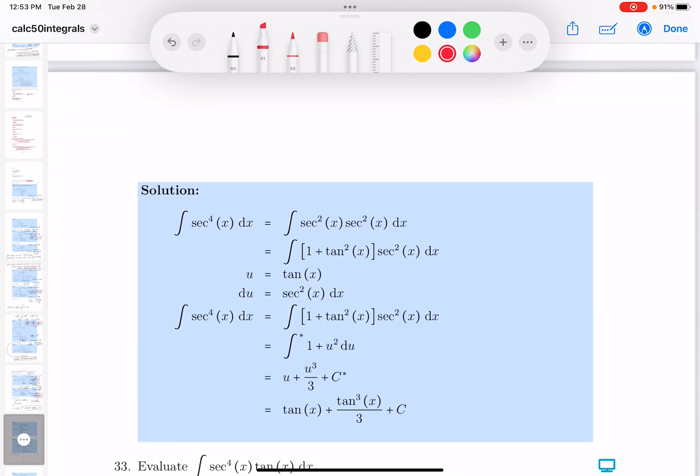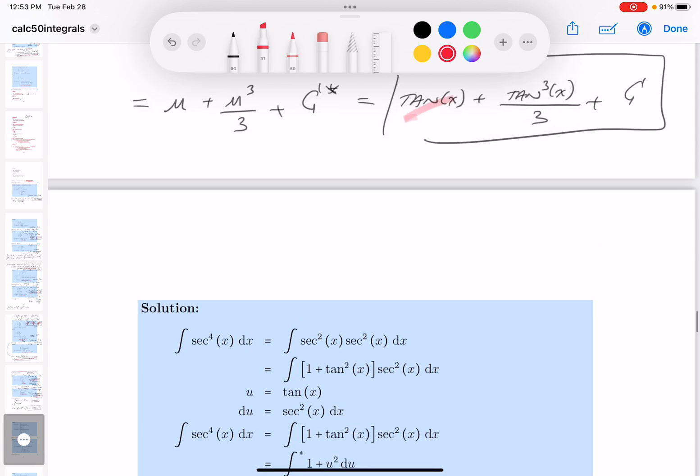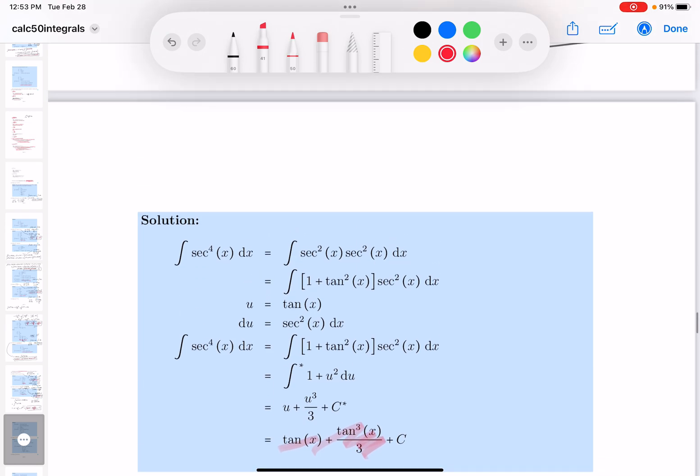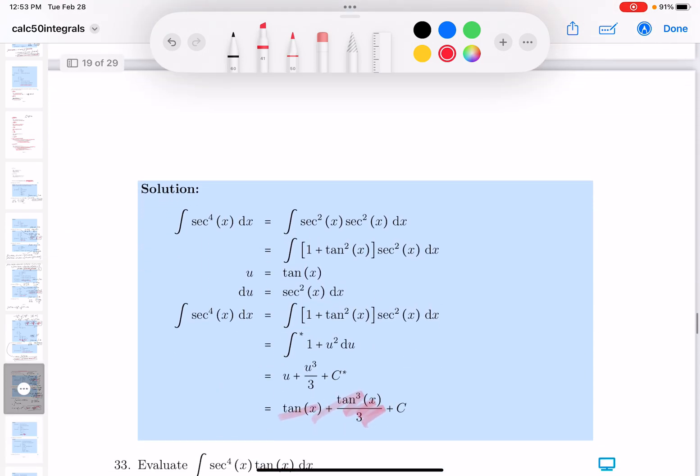And I'm seeing it right over here. The tangent of x, I see that. The next term I see is tangent cubed of x over 3 and then the constant C over there. I think you're looking good. Thank you.